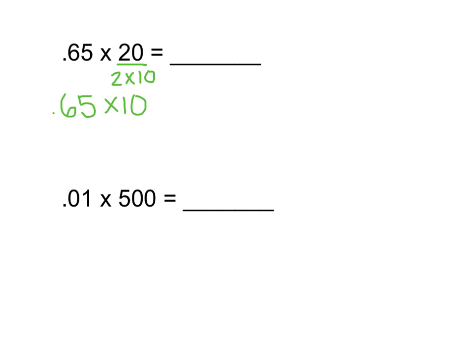Multiplying 65 hundredths by 10 — moving the decimal to the right one place — gives me 6 and 5 tenths, or $6.50. Now I need to multiply that times 2. I know that 6 times 2 is 12, and a half times 2 is 1, so that's 12 plus 1, or 13. So 65 hundredths times 20 is 13 — in other words, 20 candy bars at 65 cents each would cost $13.